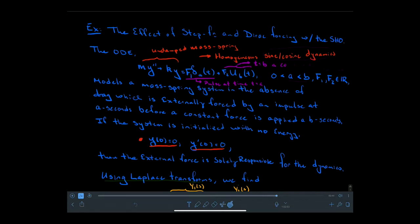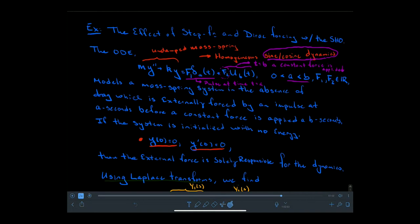At time B, a constant force is applied via a step function. The system will not be moving until time A, when it's hit with a hammer. Then sine-cosine dynamics begin as a consequence. At time B, where A precedes B, you can think of the mass-spring system taking on an extra constant load — like pulling down with a little bit more force. The step function turning on this extra external force causes a change in the displacement of the oscillation, so the system continues oscillating but around a new equilibrium point.